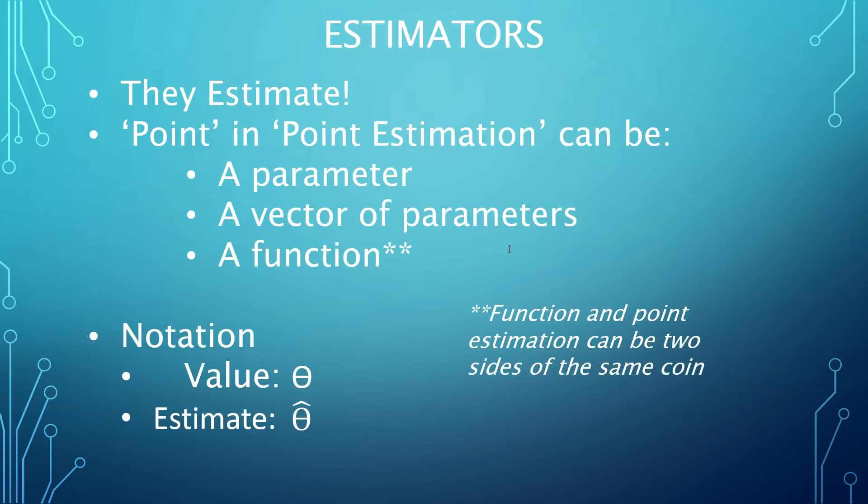As you might expect, point estimation generally speaks to the attempt to make the best possible prediction of a value of interest. The interesting part here is in asking what exactly is the object of interest. For machine learning applications, we're not only interested in estimating single values, but also large vectors of values. Pushing this thinking further, we're also interested in estimating functions, which makes sense if you think about a function as being a point in function space.